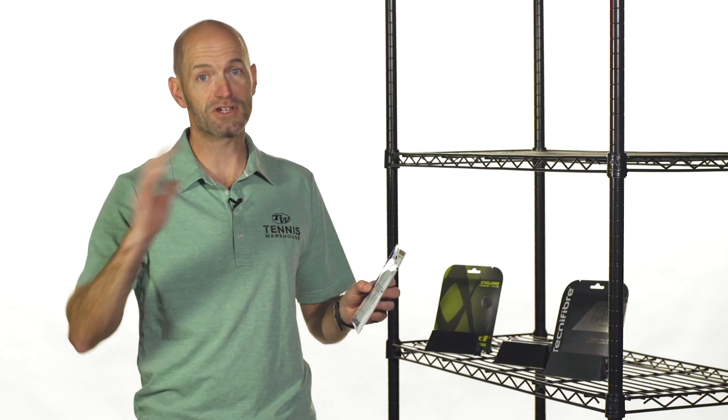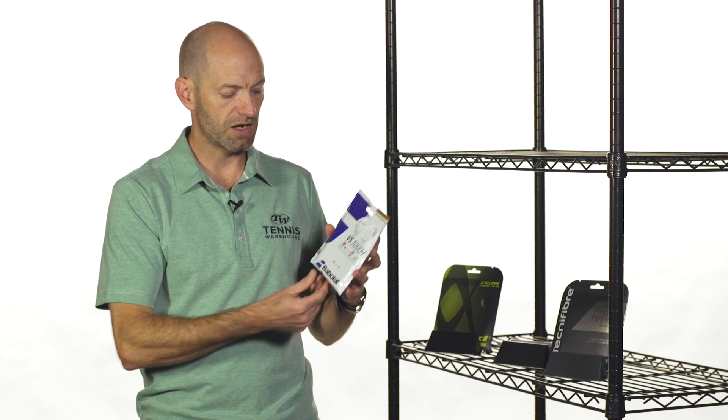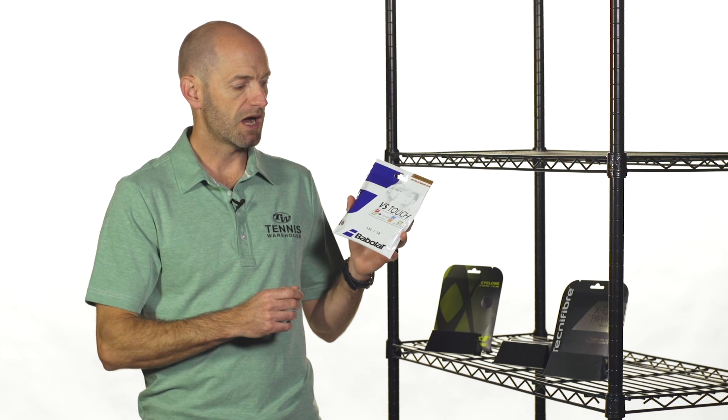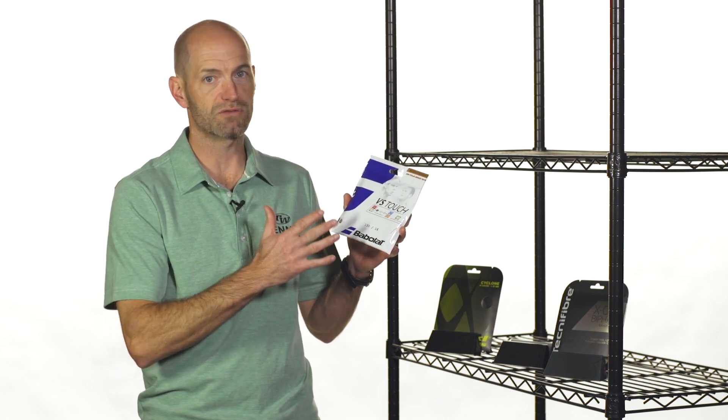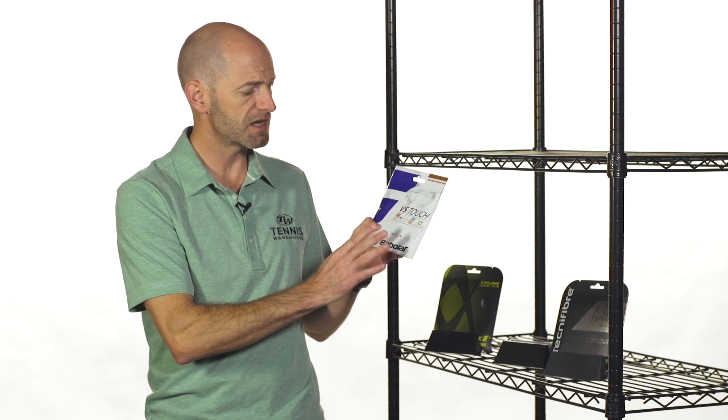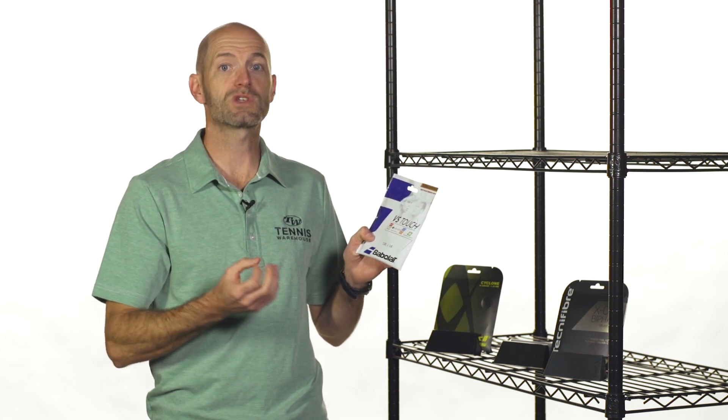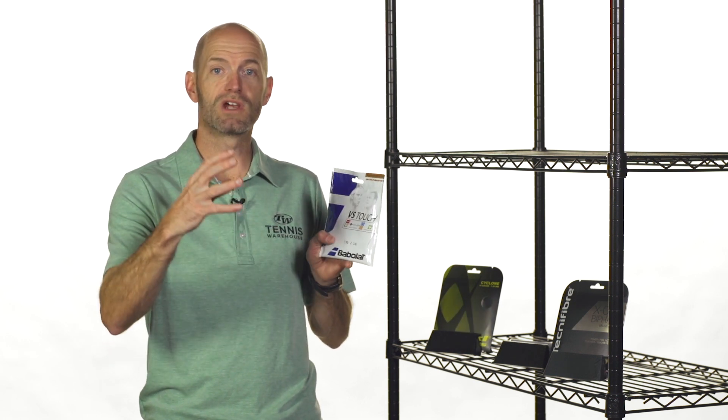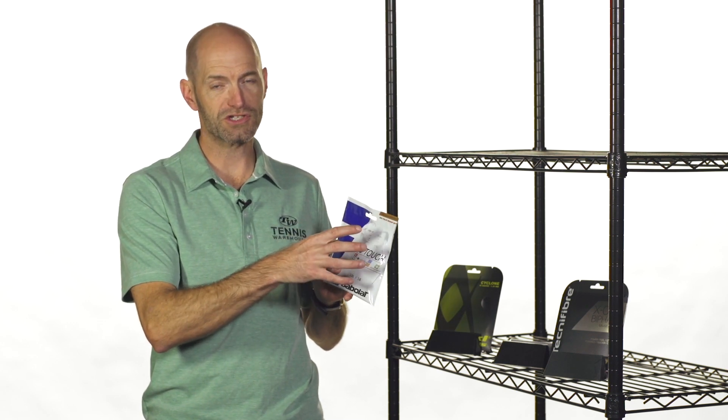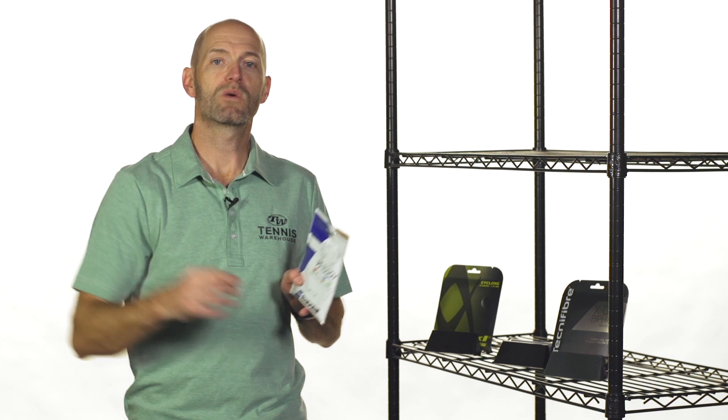Now the other extreme is Natural Gut. I've got Babolat VS Touch right here. It's just a dynamite Natural Gut. This is under 100 on the stiffness scale. So this one comes in right around mid-90s, like around 96, 97 I think for VS Touch. And so it's obviously a very soft string, really lets the ball sink in to the string bed, retain a little bit more of its shape, and then it can spit it out with more power.